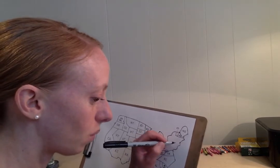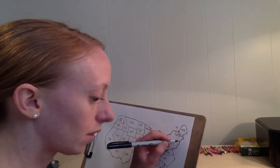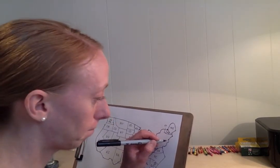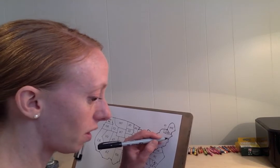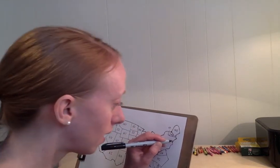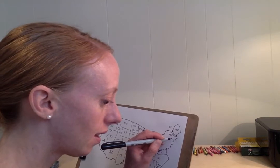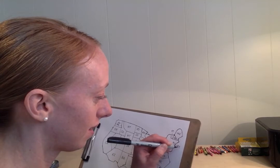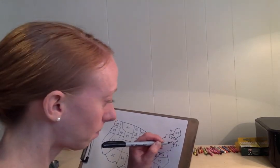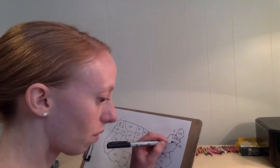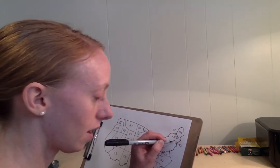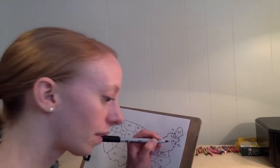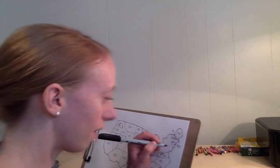Let's do this step by step. We have Massachusetts next. From this first point here, we're going to cut in and down. Here's Rhode Island. Then go over and down — and we have Connecticut.